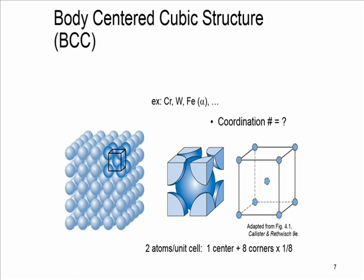The next type of metallic crystal structure is the body-centered cubic structure, or BCC. Here atoms touch each other along the cube diagonal — the atom in the middle touches the others along the diagonal. The atoms are all identical; the difference in shading is only for ease of viewing. Examples of BCC metals are chromium, tungsten, iron (alpha phase), tantalum, and molybdenum.